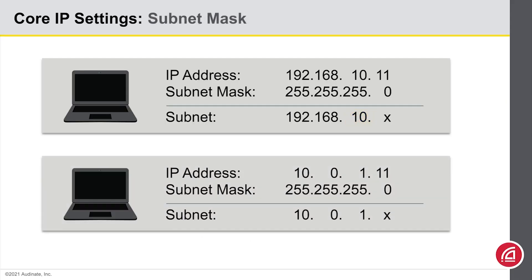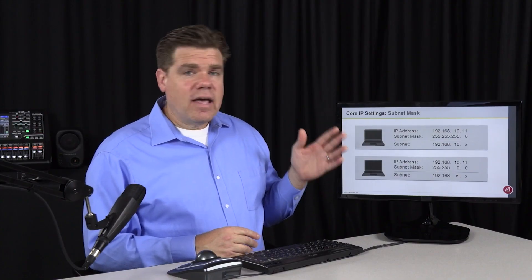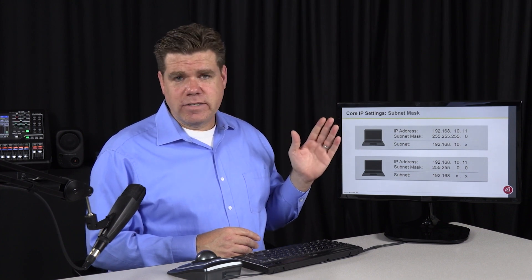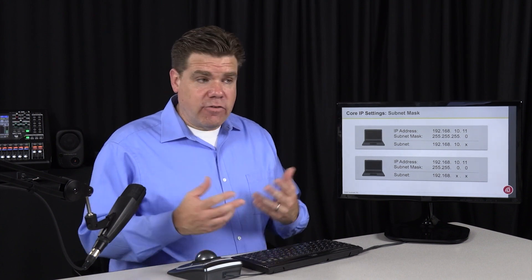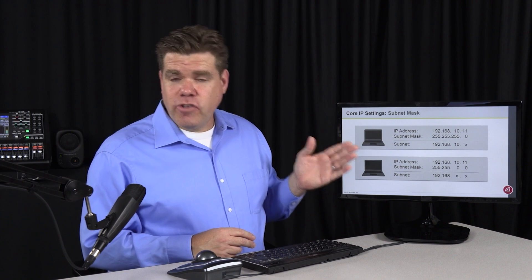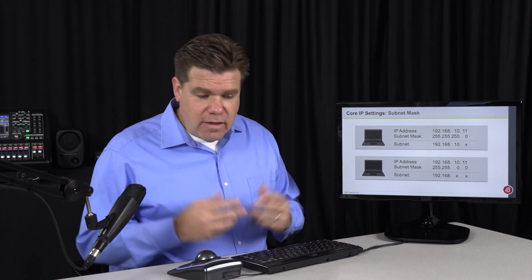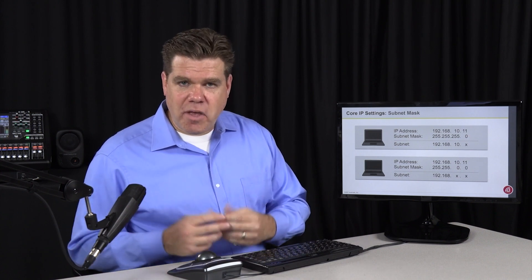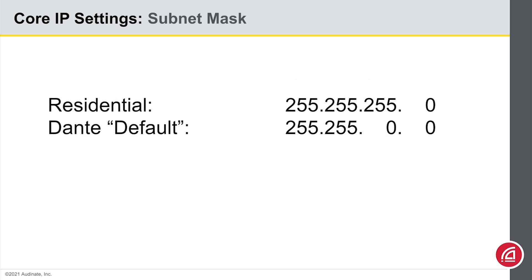Let's look at this a couple of different ways. Here are two examples where I change the IP address but keep the subnet mask the same — we see that can yield different subnets. Here's another example: I'm keeping the IP address the same but changing the subnet mask. What happens now is we change the size of our subnet. In the top example, I can change the last field of the IP address to any number I want and the device will be considered in my subnet — that's just over 250 addresses. In the bottom example, I can change two fields of the IP address to any number I want, giving me over 65,000 IP addresses. So changing the subnet mask changes the size of my subnet. That gives us an explanation of subnet masks commonly found in residential networks or the Dante default network when we go link local.